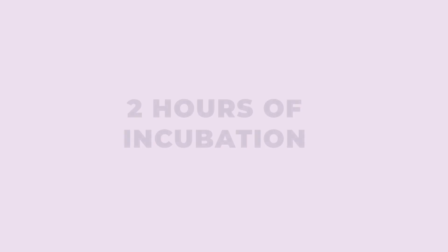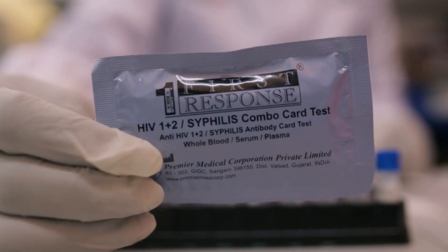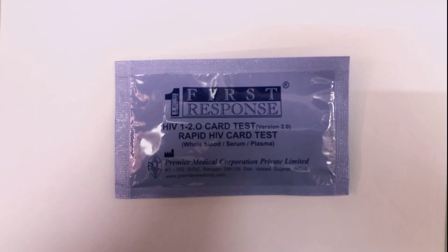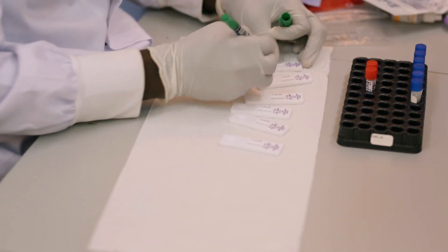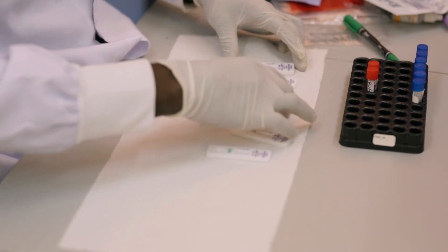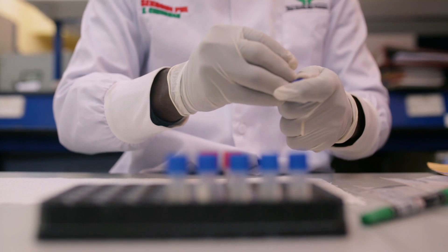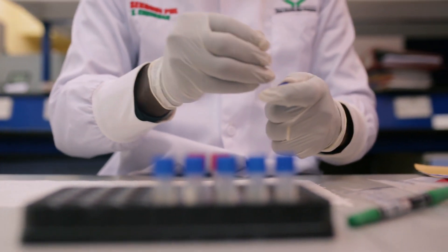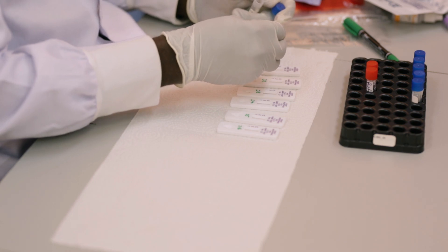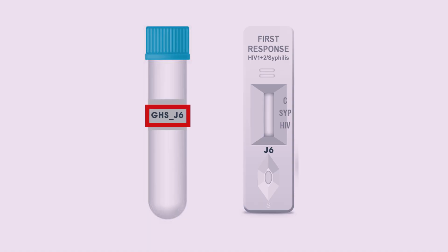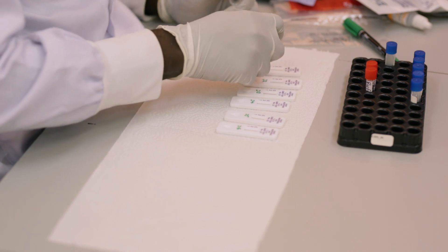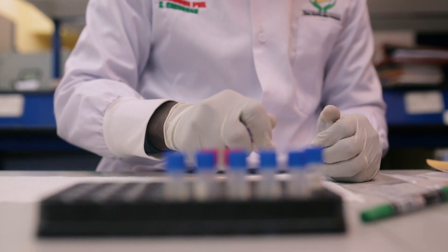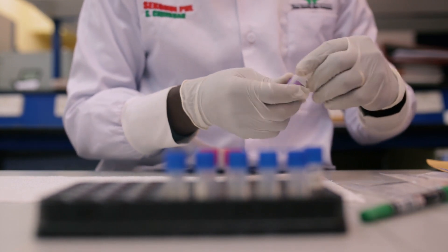After 2 hours of incubation, assemble your test kits. ANC sites remember you are using combo, whilst the other sites will use kits for the general population. Check the expiry dates to make sure your kits are good. Tear the pouches and bring out your test kits. Label the test kits with the IDs on the sample. Tap your sample to mix properly and with a dropper, transfer a drop of the sample to the sample well of the test kits. Make sure the ID on your sample corresponds to the ID on the test kit when adding the sample. Add a drop of the test kit buffer. Wait and time according to manufacturer's instructions before you read your results.